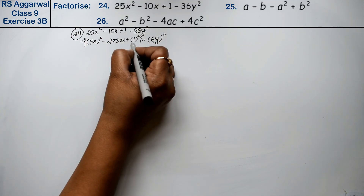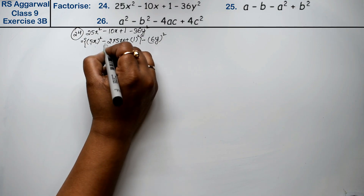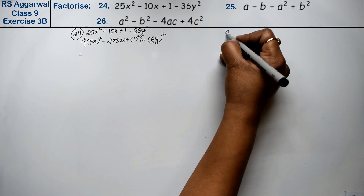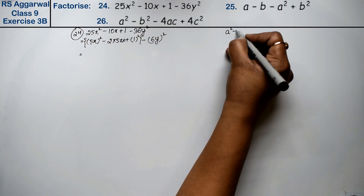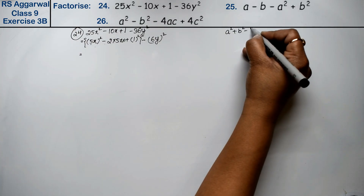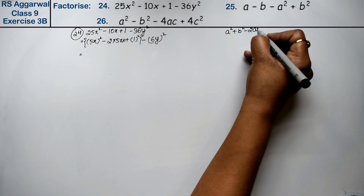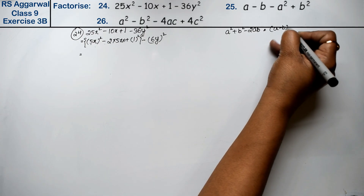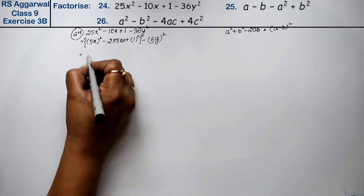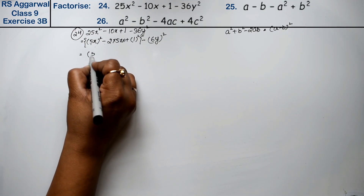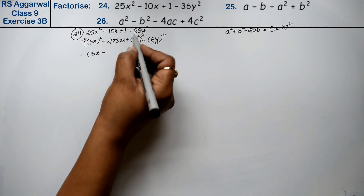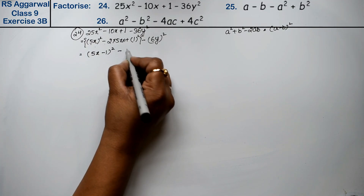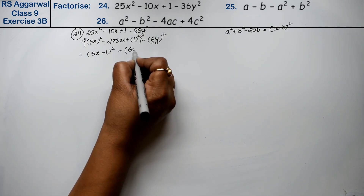The formula is a² + b² - 2ab, which equals (a - b)². So 25x² - 10x + 1 becomes (5x - 1)². That gives us (5x - 1)² minus 36y².